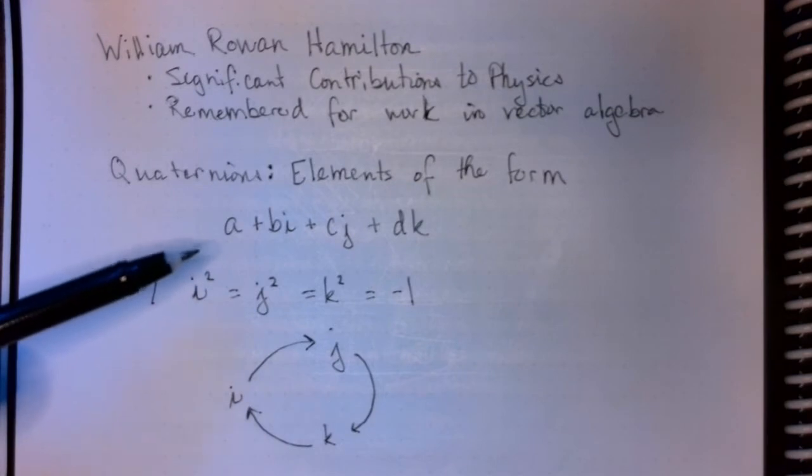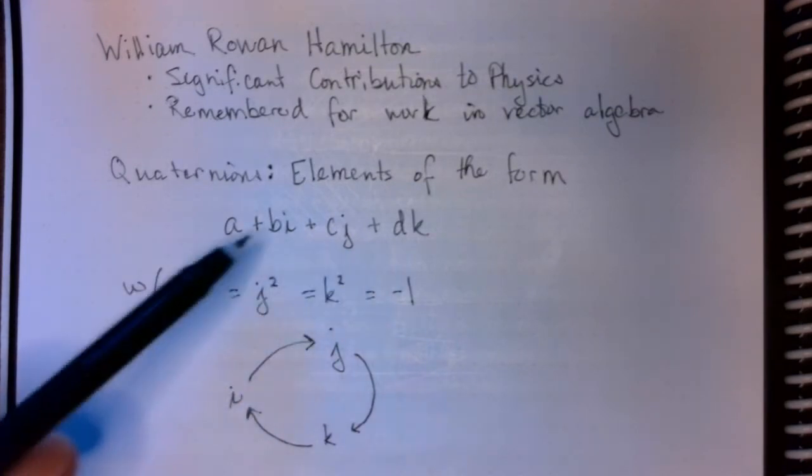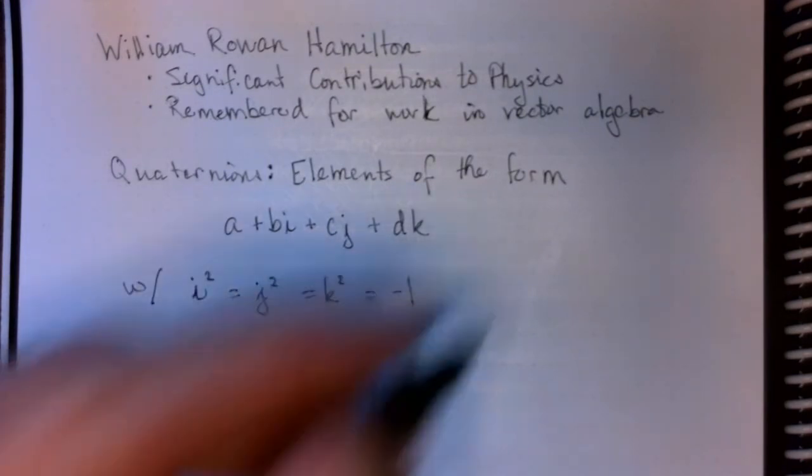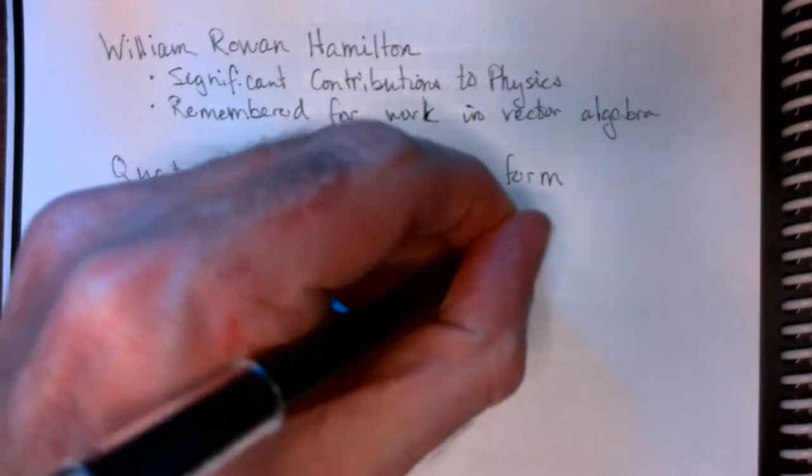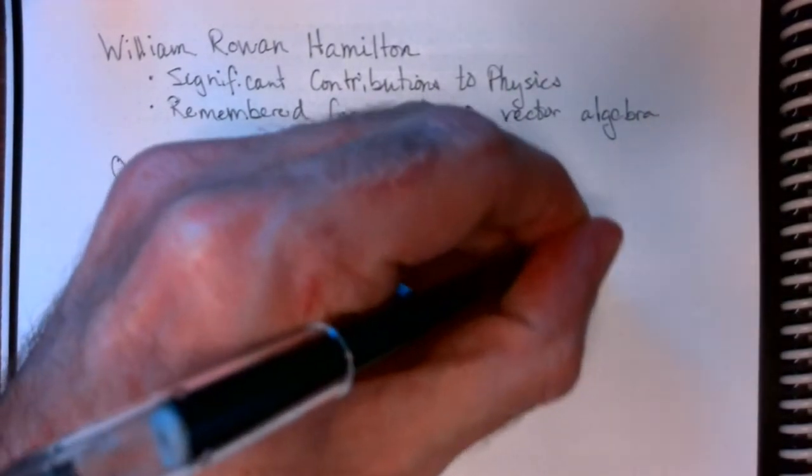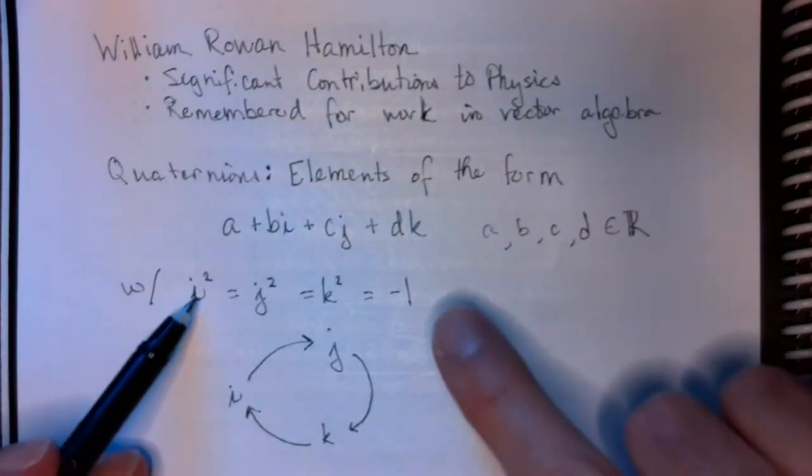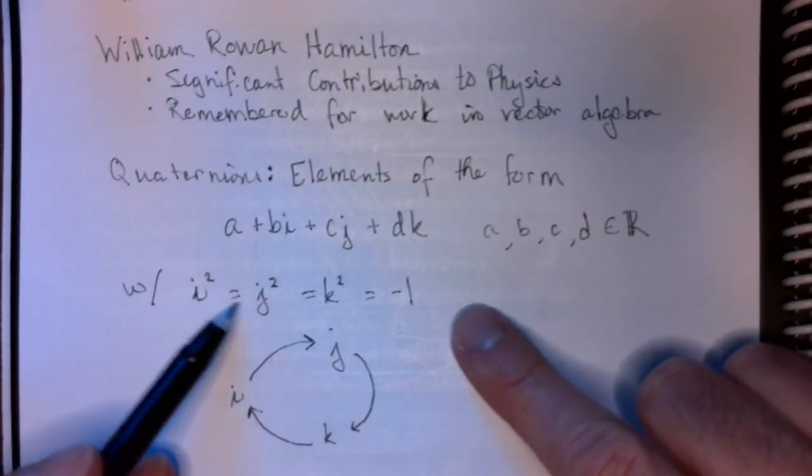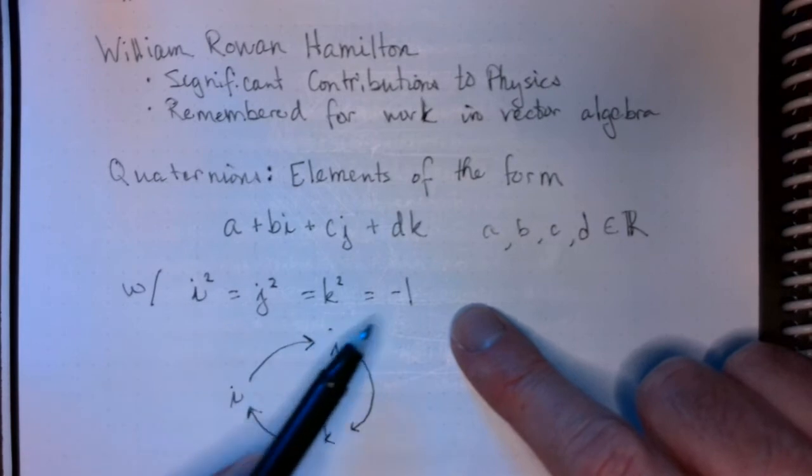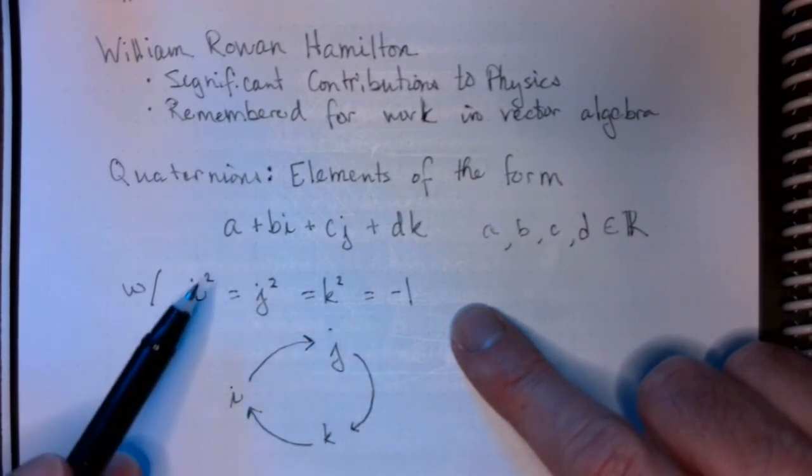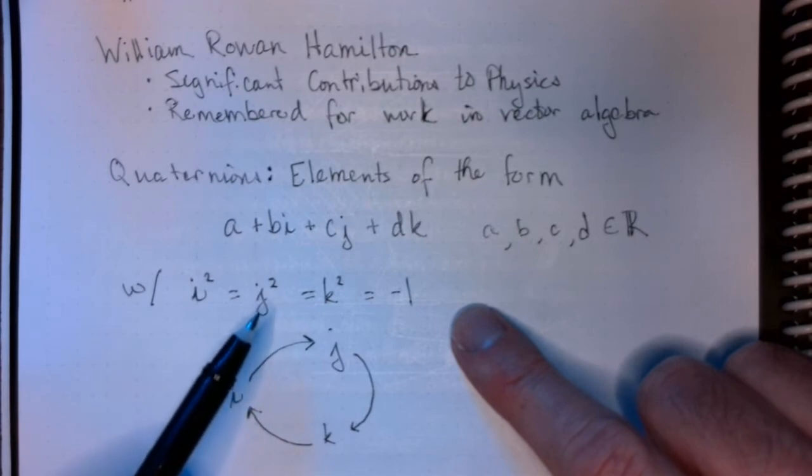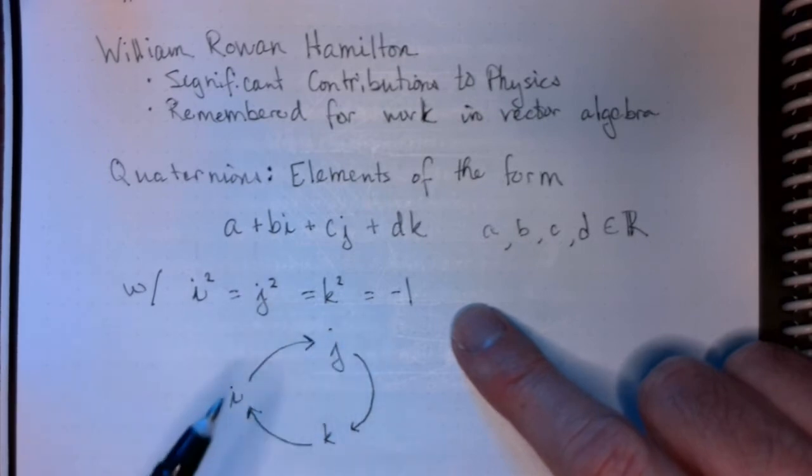So, quaternions are four-dimensional numbers of this form: a + bi + cj + dk, where a, b, c, and d are real. i, j, and k all have the property that if you square them, you get negative one. So, just like with the complex number system, i squared gives you negative one. J squared and K squared also give you negative one.